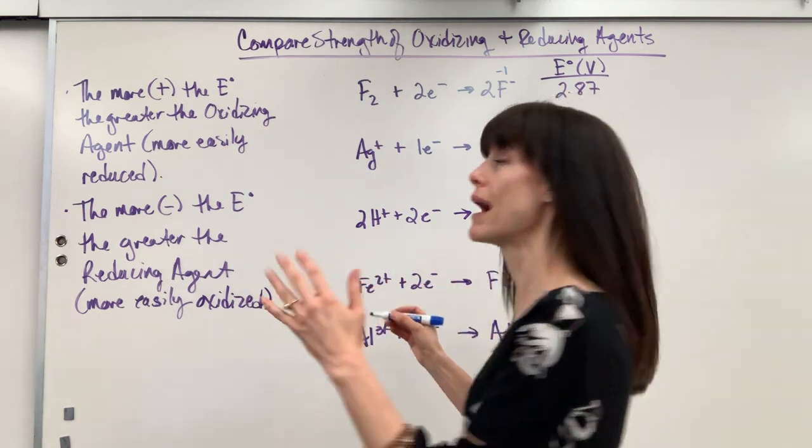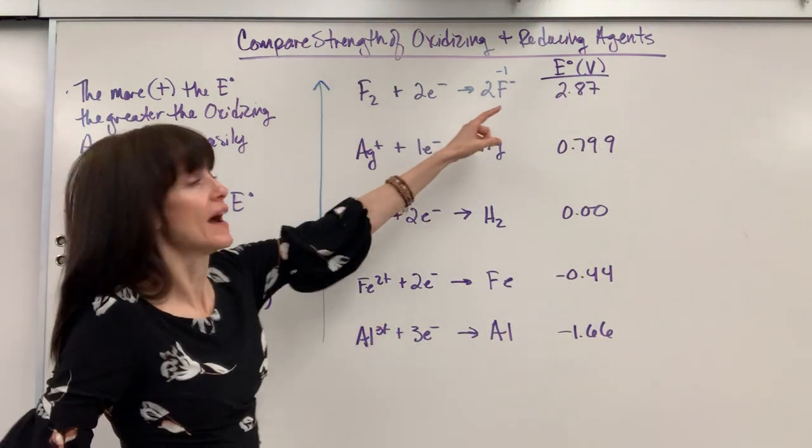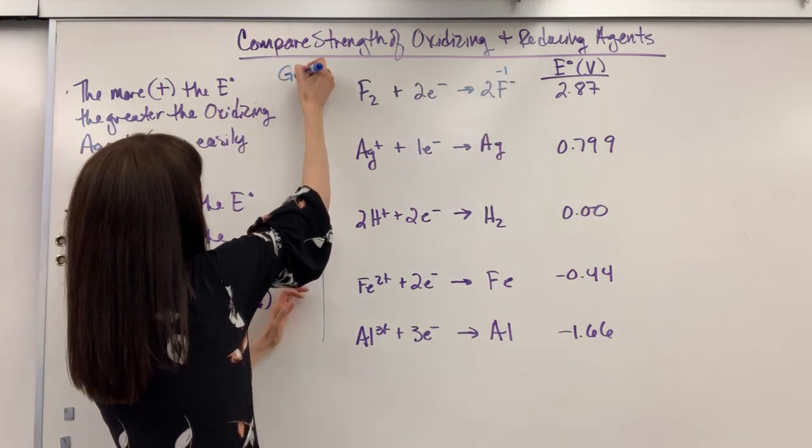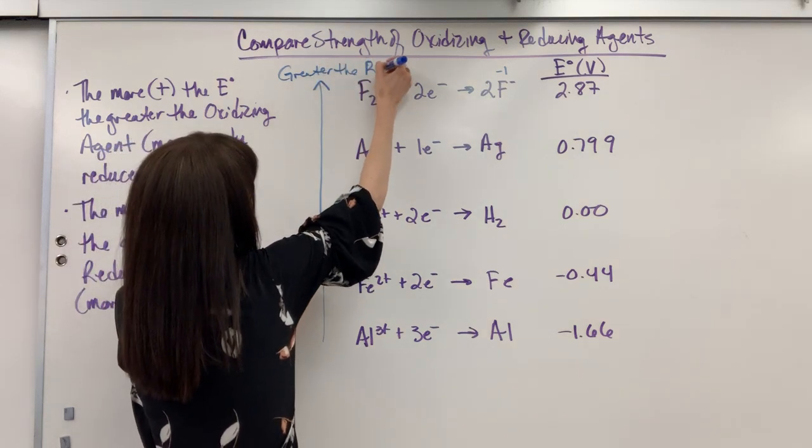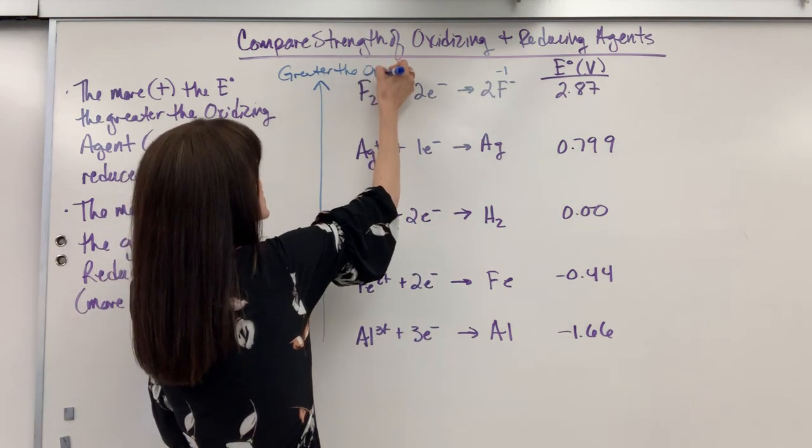I'm just going to remind you that the more positive that E value on a standard reduction potential table, this is going to be the greater the oxidizing agent.